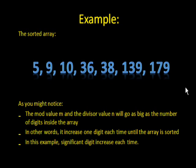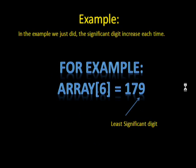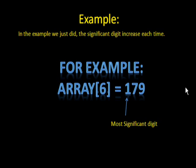As you might have noticed, the mod value m and the divisor value n will go as big as the number of digits inside the array — in other words, it will increase one digit each time until the array is sorted. In this example, the significant digits increase each time. The least significant digit when you start is in the ones column, on the rightmost side of your number. The second least significant digit is in the tens column, and in this case the most significant digit would be in the hundreds column. Anyway, thanks for watching — that is how a radix sort works. I hope this has been useful for you, and I wish you all well in your computer science and mathematical adventures. Thank you.